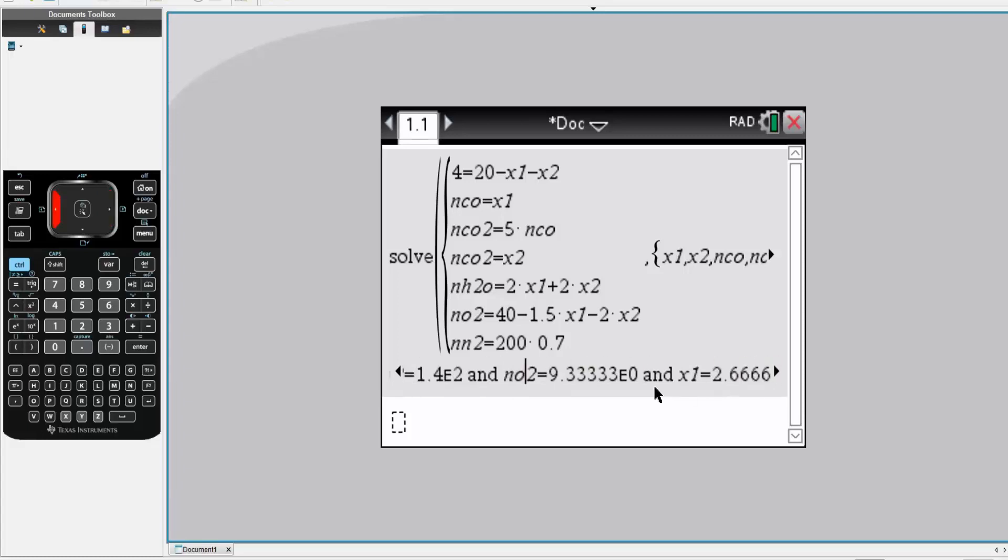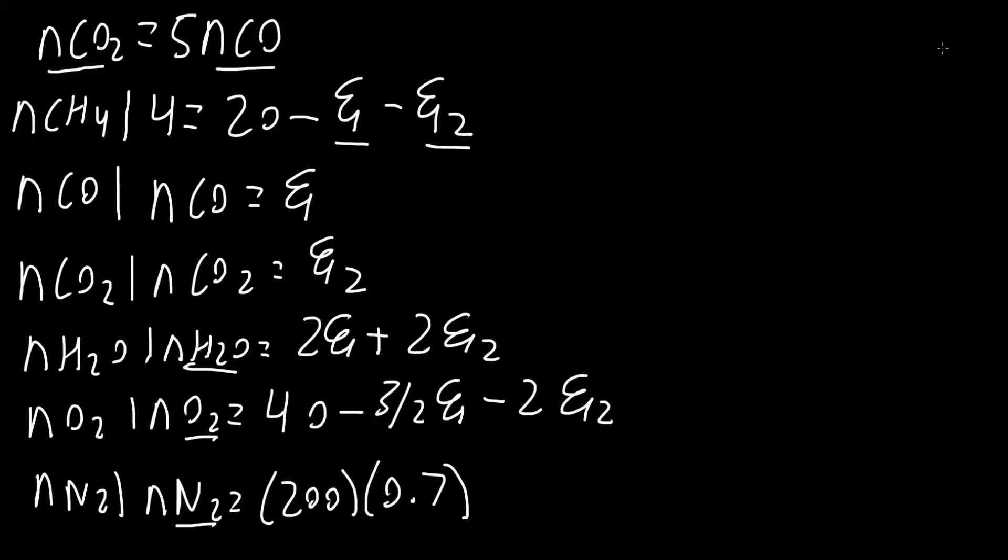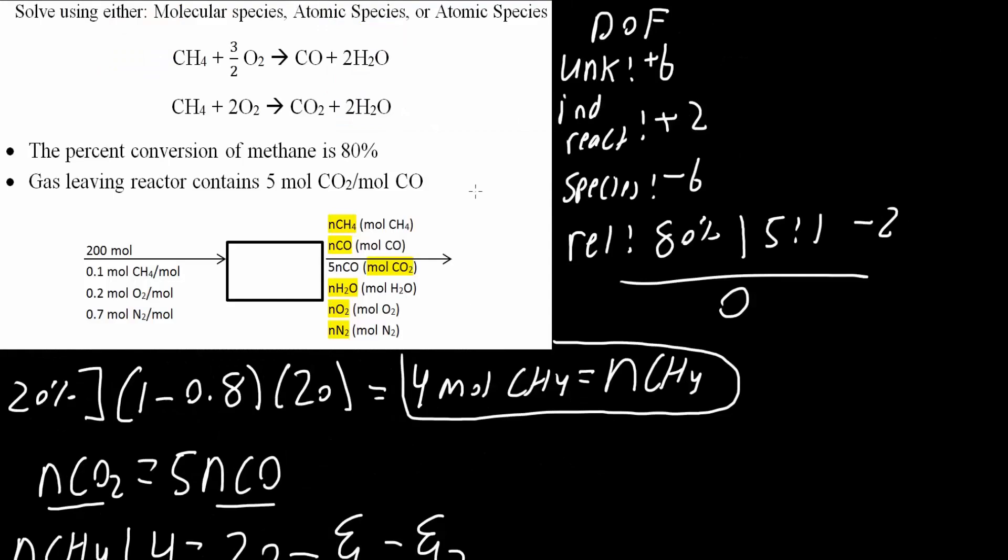Now we need to get the others. Water was 32, nitrogen was 140, and oxygen was 9.333. And that's all we need to do for this problem. And just, you know, maybe if you didn't write the problem down, this was the problem.